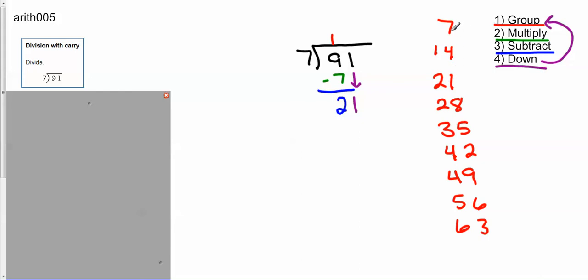Well, is there a number greater than, or less than, or equal to 21? Yep, seven's less. 14. Oh, there's 21. Exactly. So that's one, two, three groups. So I put a three up here.